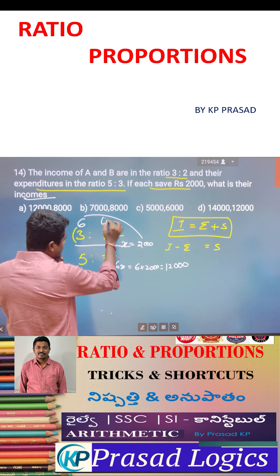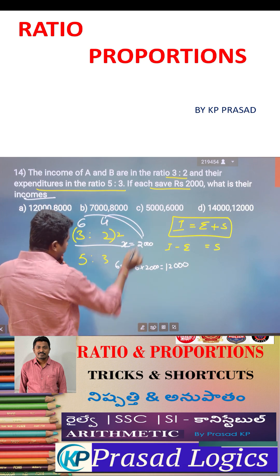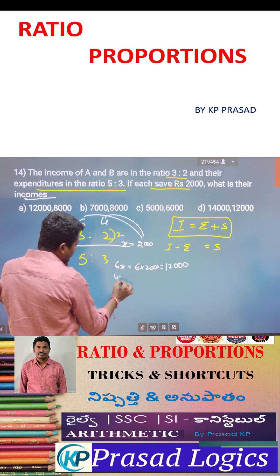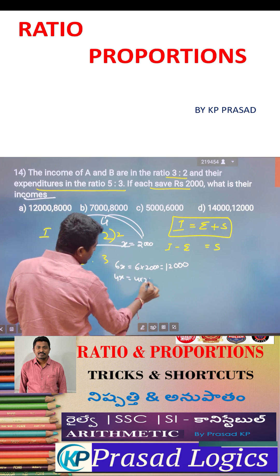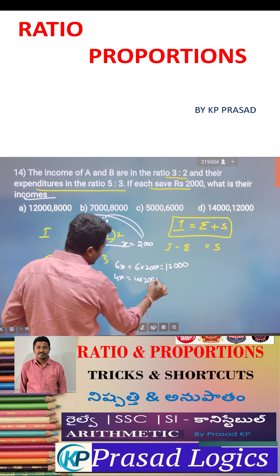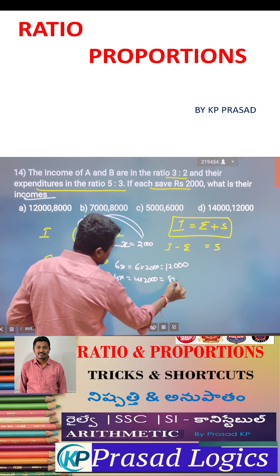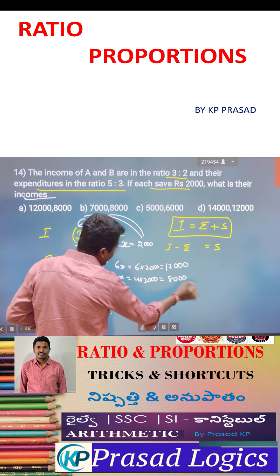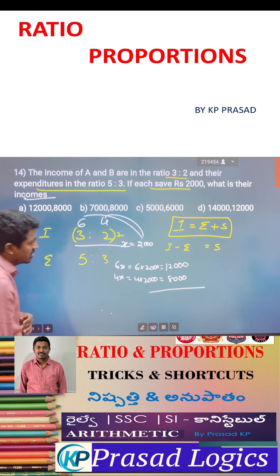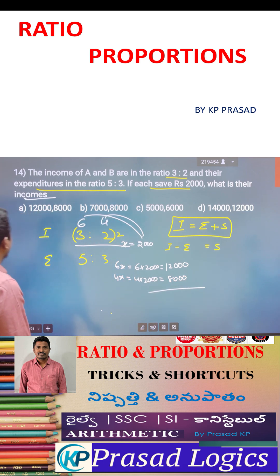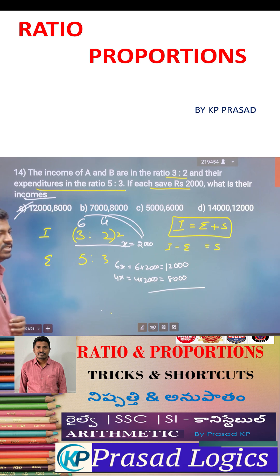Then what is next? 4x means 4 into 2,000 rupees, which is equal to 8,000 rupees. So the incomes are 12,000 and 8,000. Option A is the correct answer.